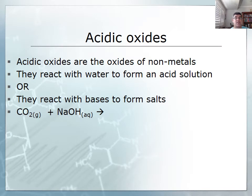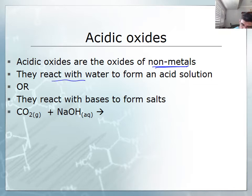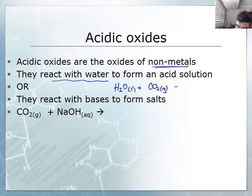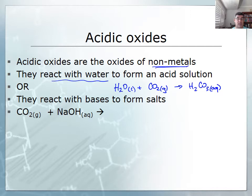In the previous video we looked at non-metal oxides, which we now know are acidic oxides. When non-metals burn in the presence of oxygen they form non-metallic oxides, and if these are added to water they can react to form an acidic solution. For example, water with carbon dioxide will form carbonic acid, and this acid in aqueous solution will increase the concentration of hydrogen ions and decrease the pH.